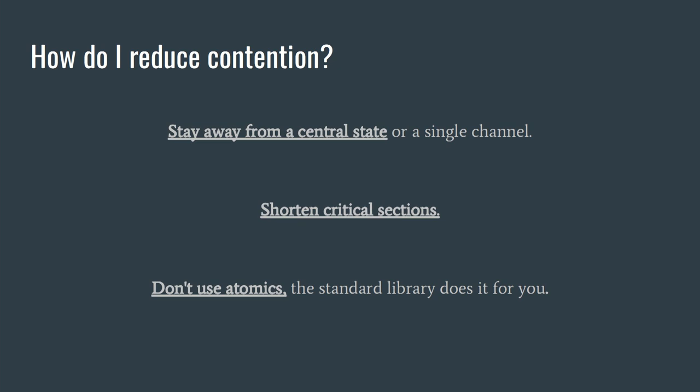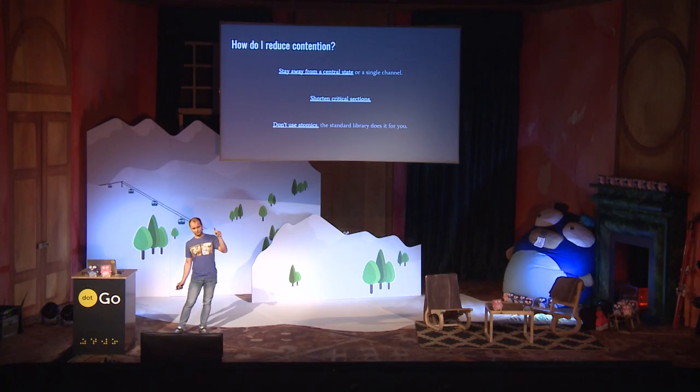If you want to really go fast in Go and you need locks and a central state, the best way is to either split it as much as you can — synchronize not very often and keep some partial states — or keep your critical sections short. Between a lock and an unlock, you can make it faster by just making it smaller. And don't use atomics. If you balance your mutexes correctly, the atomics are going to be used the right way and the race detector is going to work. If you try to do it yourself, you're alone, and atomics are very tricky and very easy to get wrong.